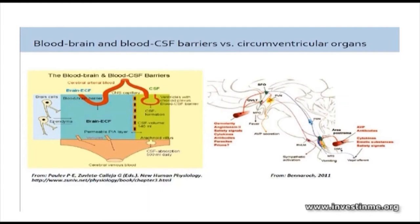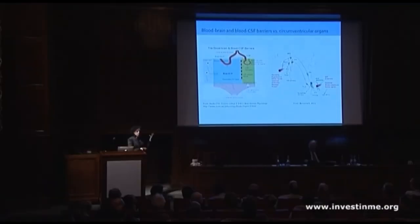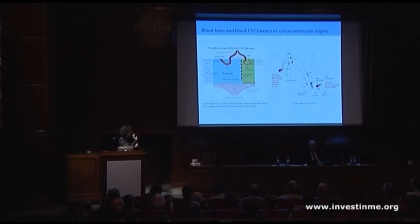These tight junctions are generally going to prevent most molecules from passing through. However, this barrier is subject to the loosening up of these tight junctions in response to a variety of factors, including cytokines, endotoxin, lipopolysaccharides — the outer proteins associated with bacteria — viral proteins as well, as well as certain hormonal effects. All of these can allow the blood-brain barrier to open up and allow passage through.